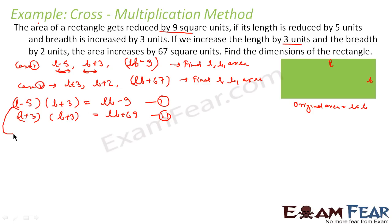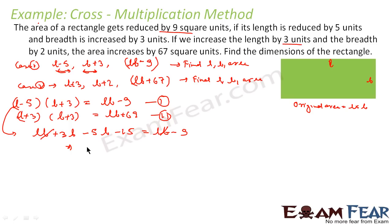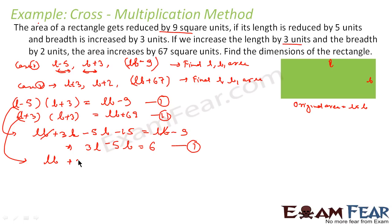Simplifying equation 1: expanding (l minus 5)(b plus 3) gives lb plus 3l minus 5b minus 15, which equals lb minus 9. After cancelling lb from both sides, we get 3l minus 5b equals 15 minus 9, which is 6. Simplifying equation 2: expanding (l plus 3)(b plus 2) gives lb plus 2l plus 3b plus 6, which equals lb plus 67.